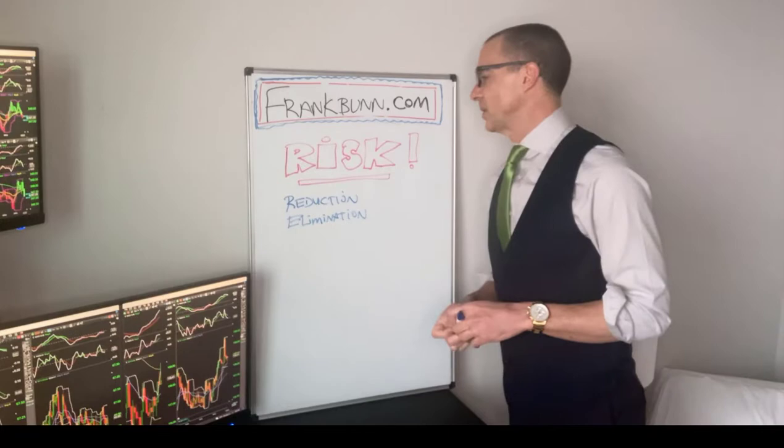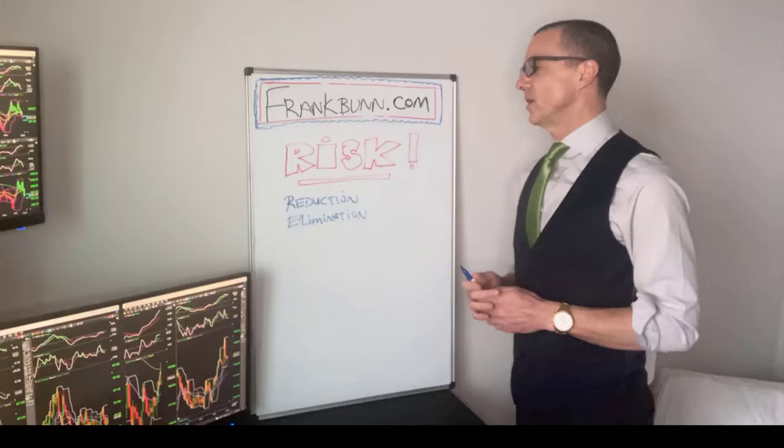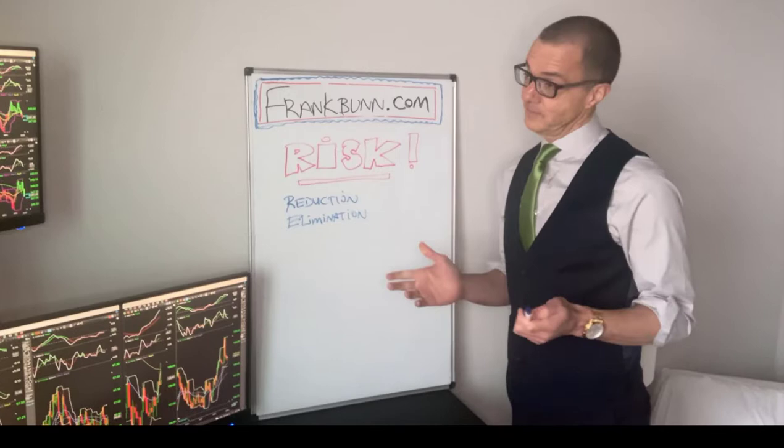My name is Frank Bunn. I've been teaching people to reduce risk and get consistent since the Dow was around 9,000 — that tells you anything. Let's jump right in.